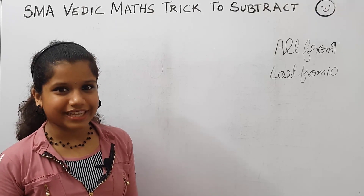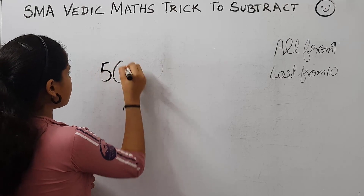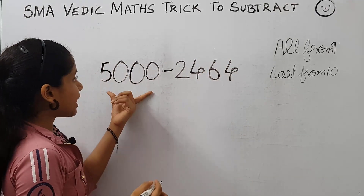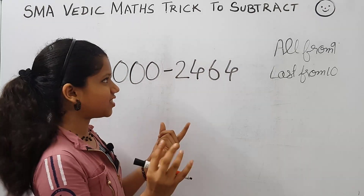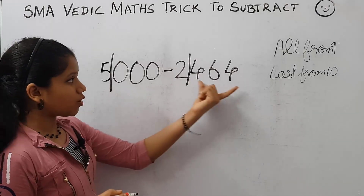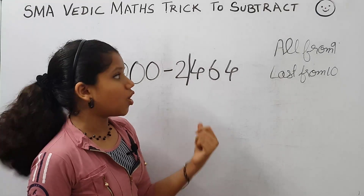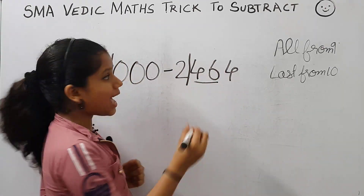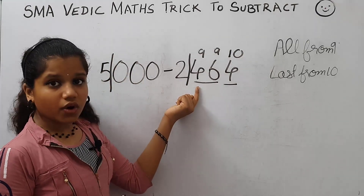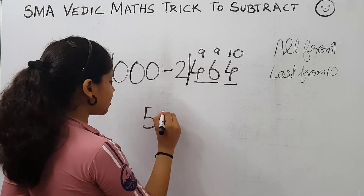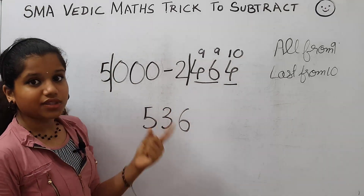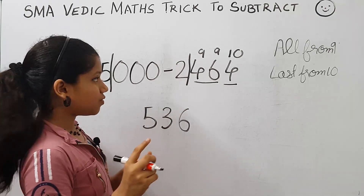Now let's take a different type of question: 5,000 minus 2,464. Here there are only three zeros but four digits. So we put a slash here and here to make the number of digits and zeros equal. We apply the rule: all from 9 and last from 10. 9 minus 4 is 5, 9 minus 6 is 3, 10 minus 4 is 6. Then we subtract 5 and 2: 5 minus 2 is 3, and 3 minus 1 is 2. The answer is 2,536.